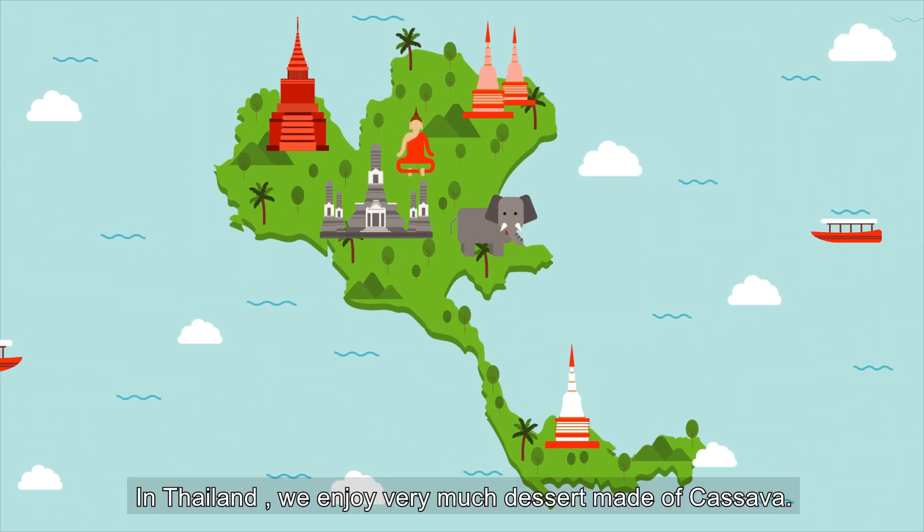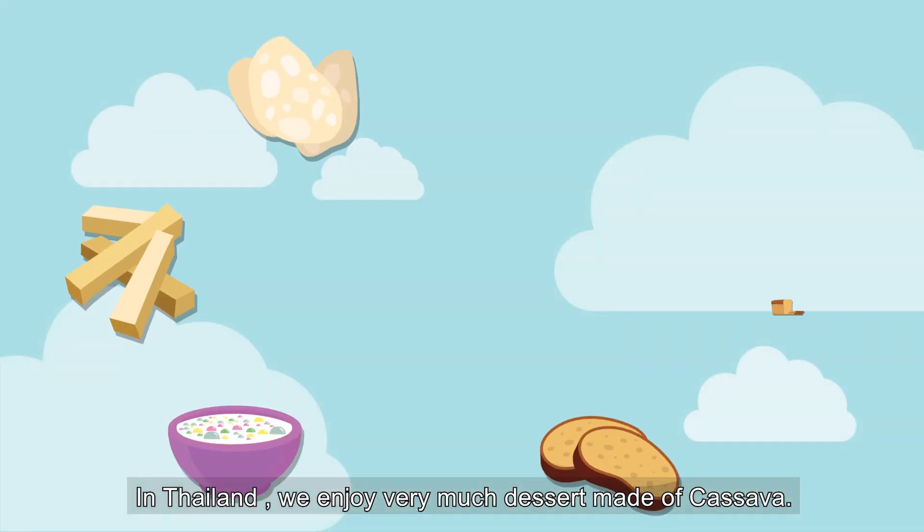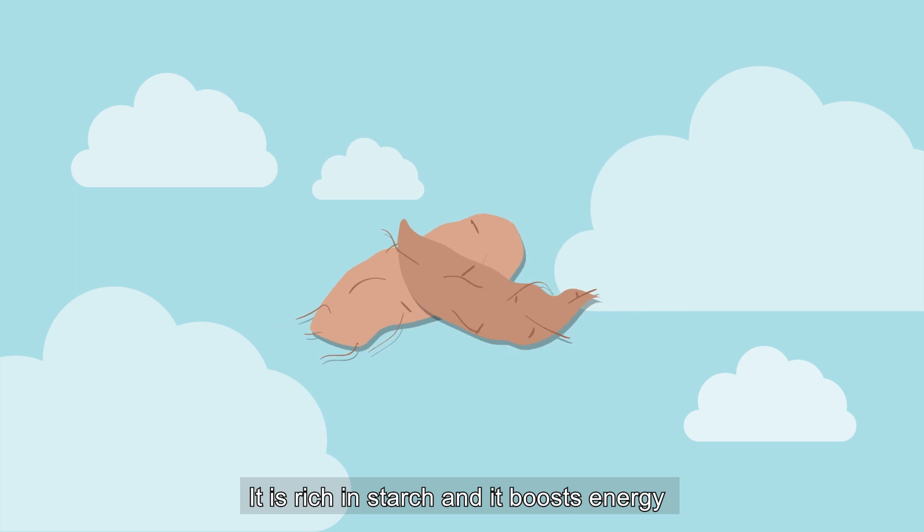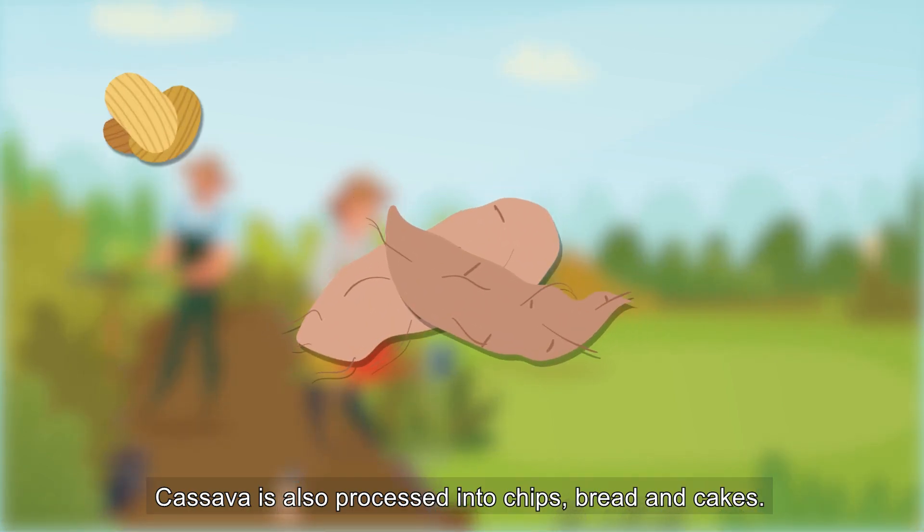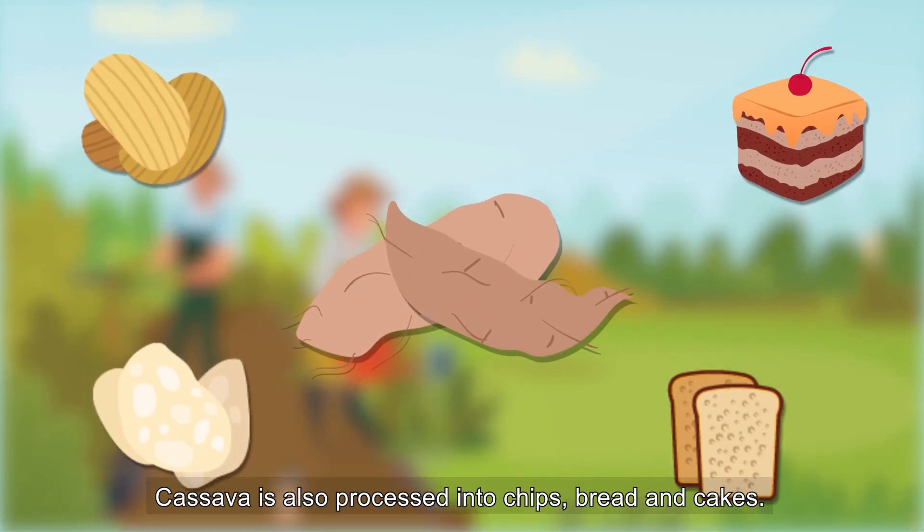In Thailand, we enjoy very much dessert made of cassava. It is rich in starch and boosts energy for our farmers, helping their work in the fields. Cassava is also processed into chips, bread, and cakes.